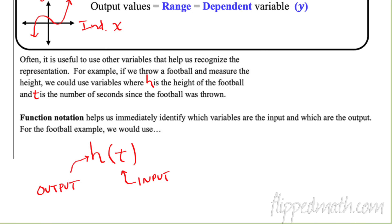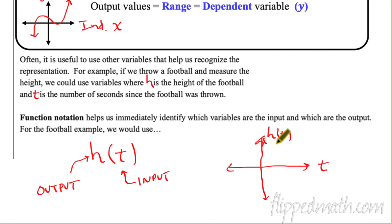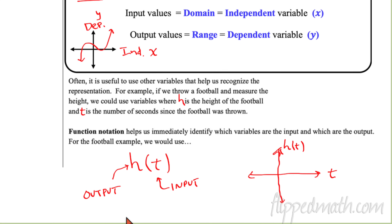If we want to use function notation with our defined variables, T would be the input — it goes inside the parentheses — and H would be the output. We could also use the words domain and range, independent variable, dependent variable, et cetera. We put the input on the horizontal axis, so we put T here for time, and then the output would be H of T, which stands for height. H of T represents the function where there's some relationship between the two.